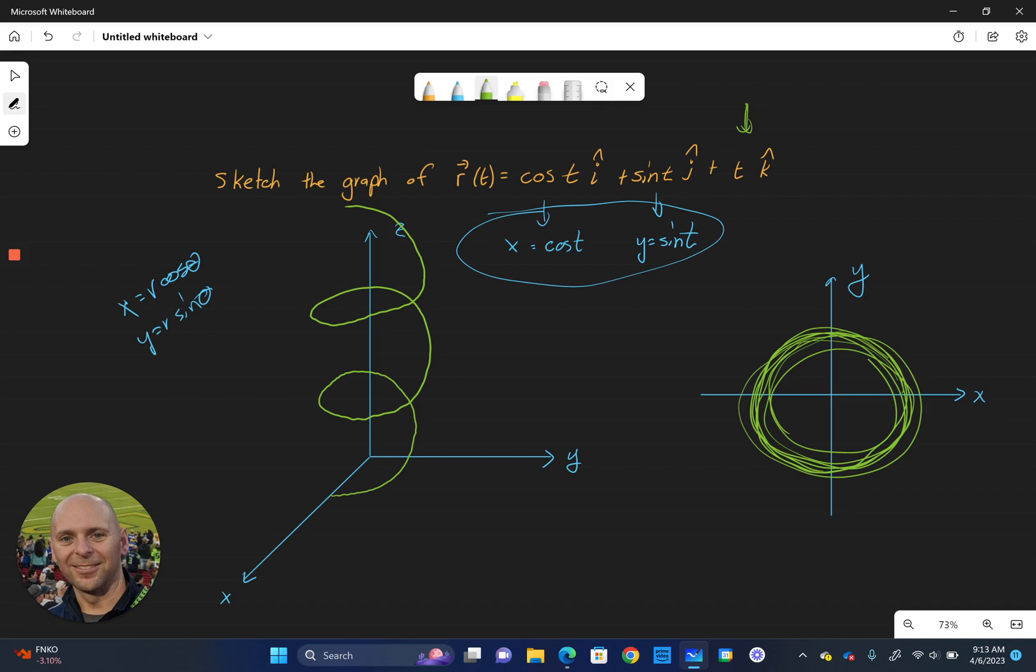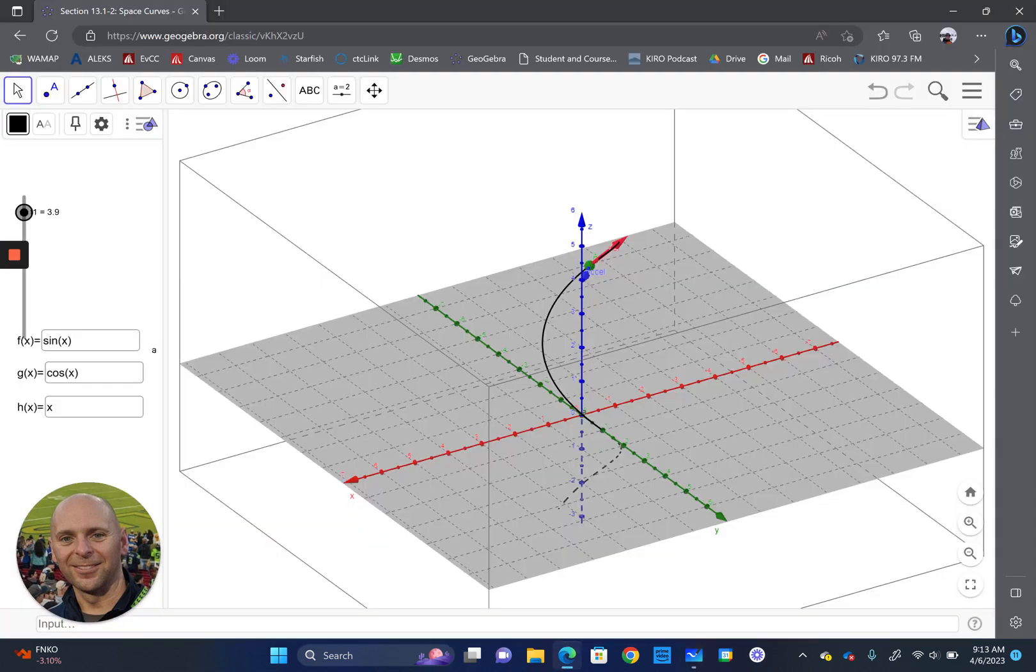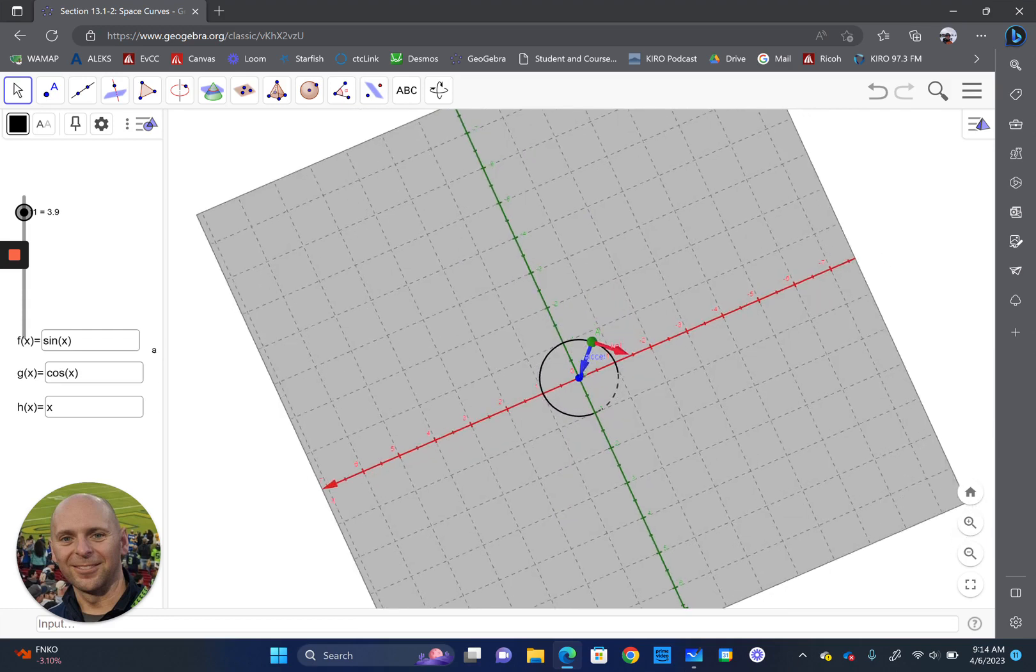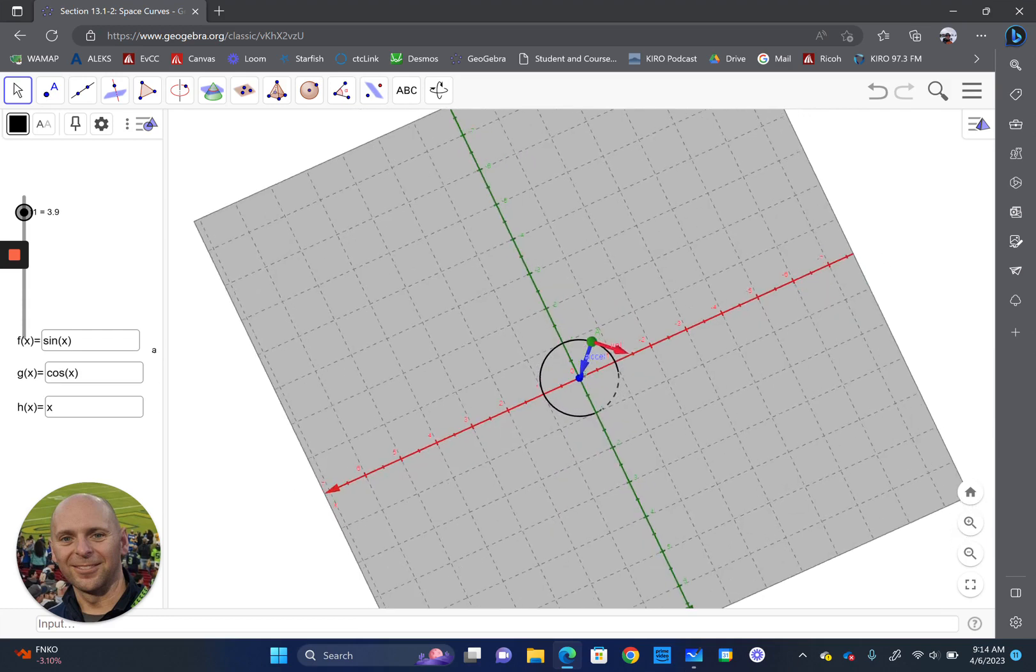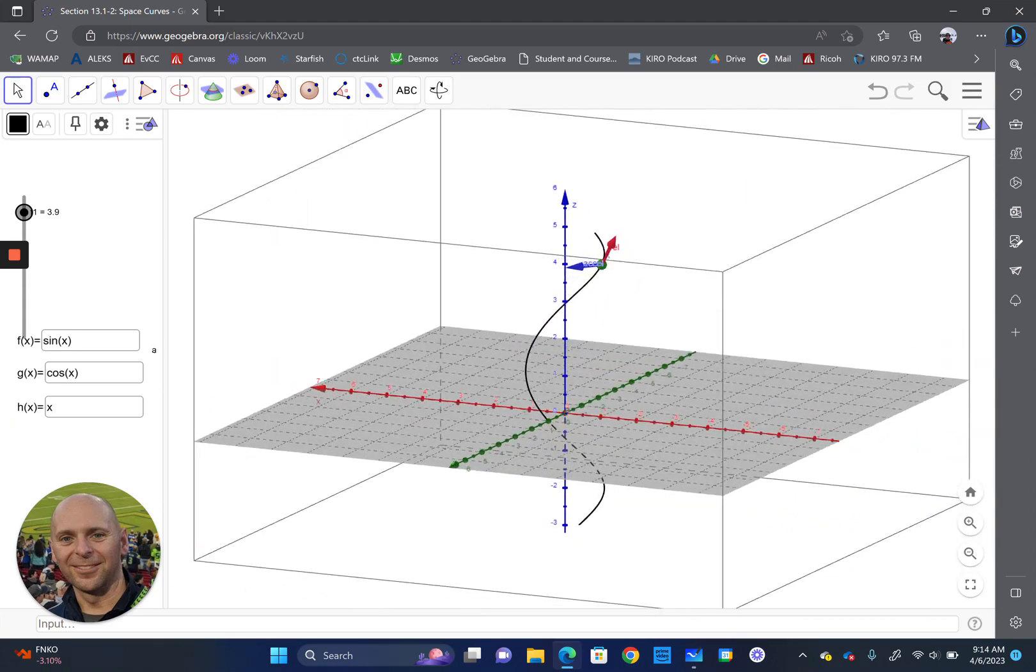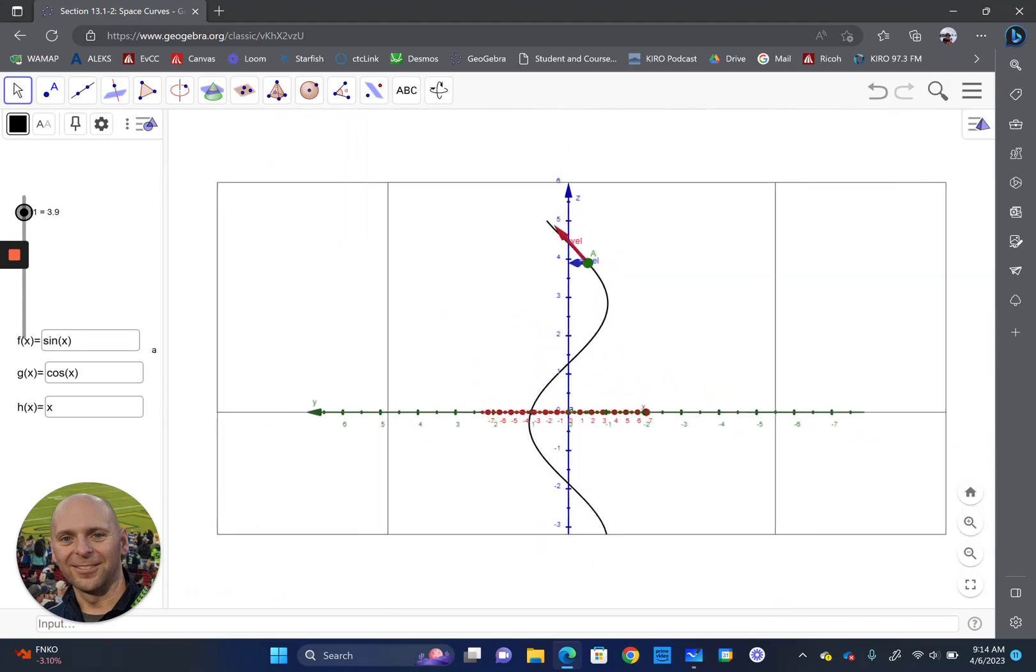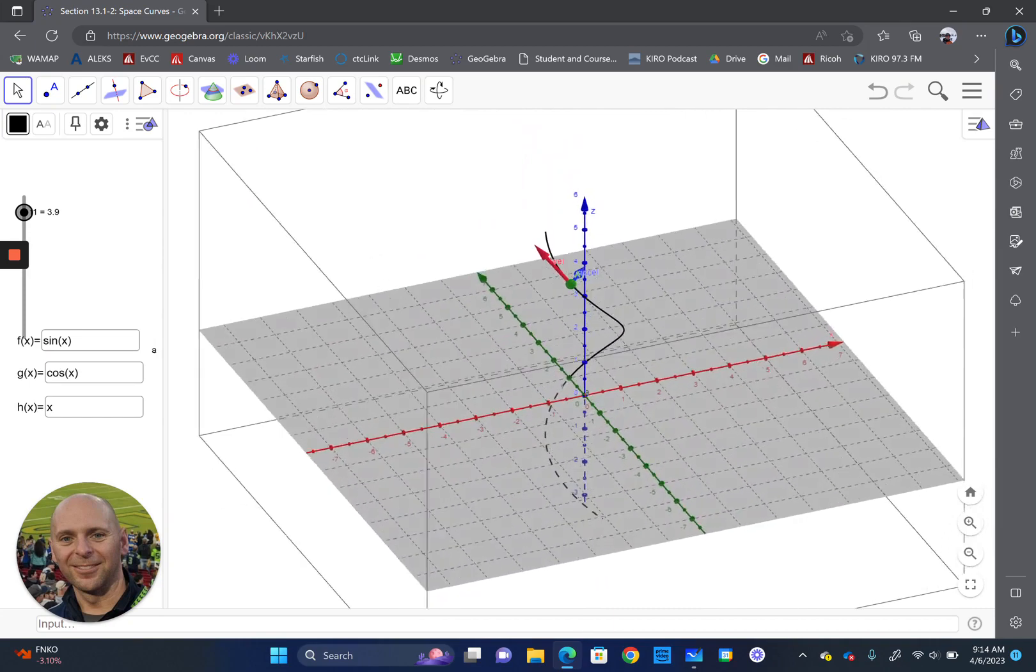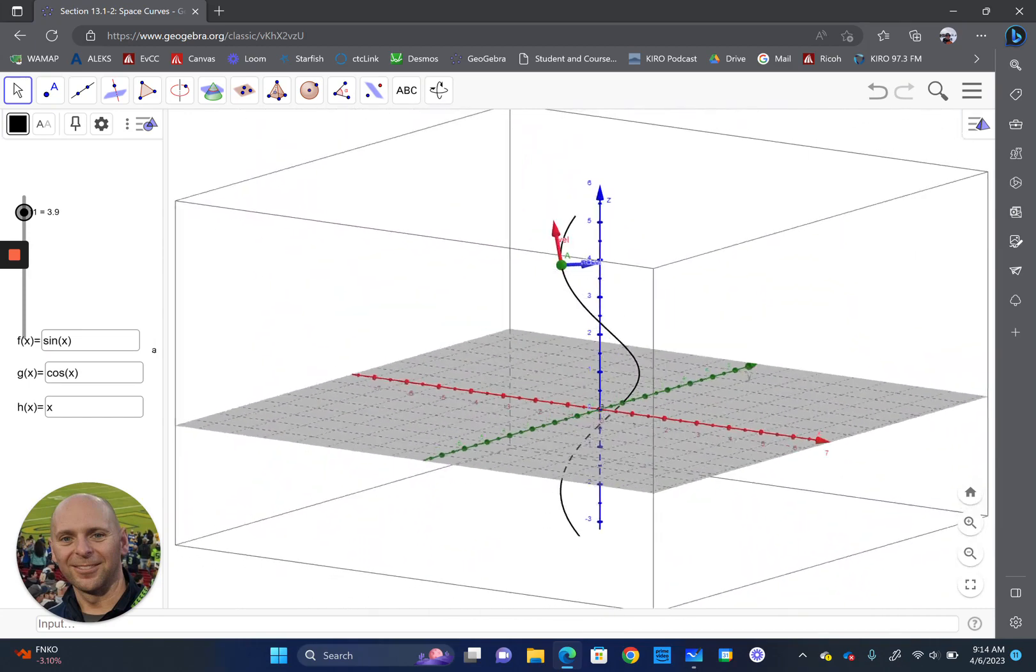I've actually graphed this here in GeoGebra so that we can get an even better look at what's really happening. You can see over here at the left, we've got sine and cosine giving us our circular nature, and then the vertical growing according to x. So we have down here, looking from the top down, our circle. And you can see that we've got this helical shape that's going up and growing in a linear fashion.